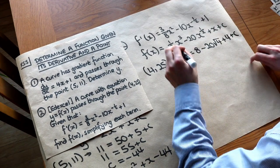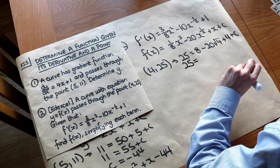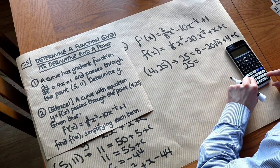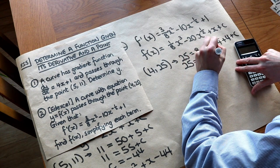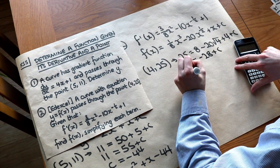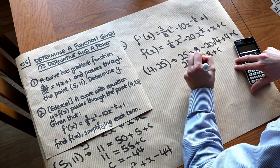Let's just simplify that. That's 25 = 8 - 40 + 4 is -28 + c. And that means the c must be 53.